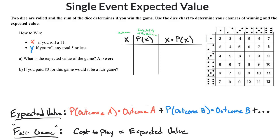It is considered a fair game if the cost of play is exactly equal to the expected value. In this particular example, we're rolling two dice. That still means it's a single event, because each roll of the dice you're rolling both — you're not just rolling one and then the other. So you are adding them up and finding the sum.